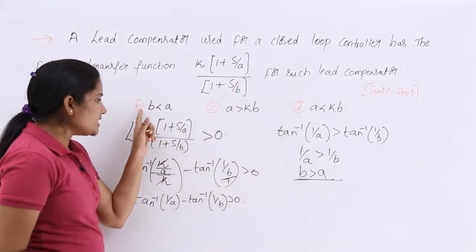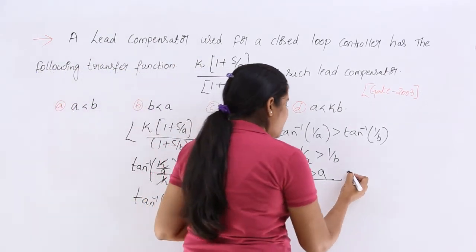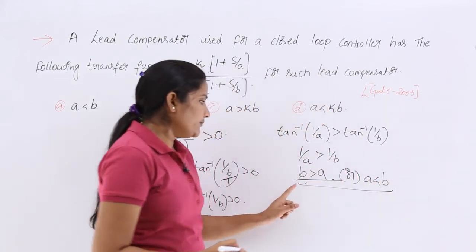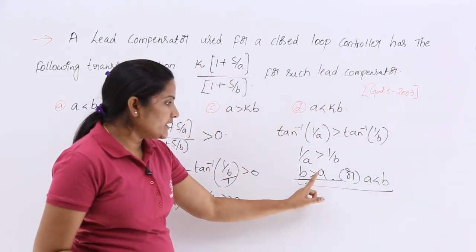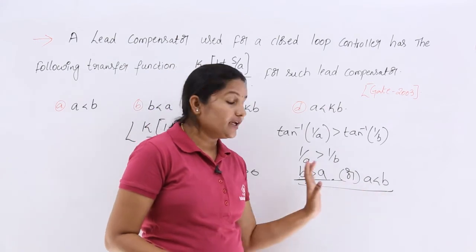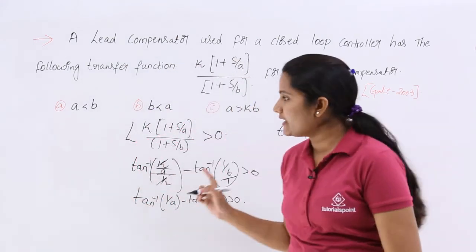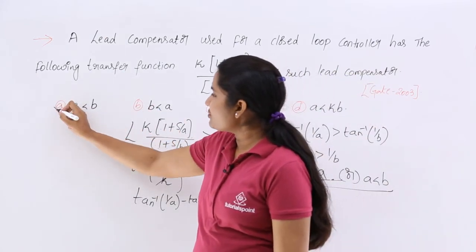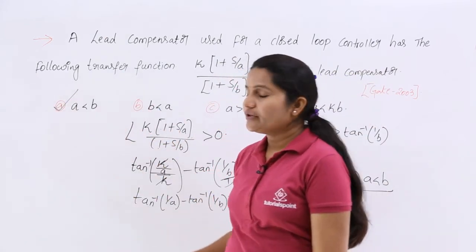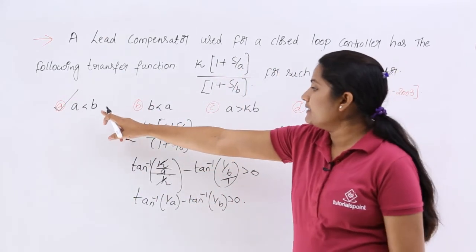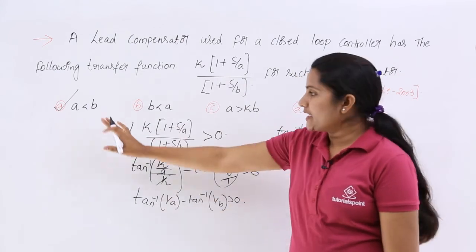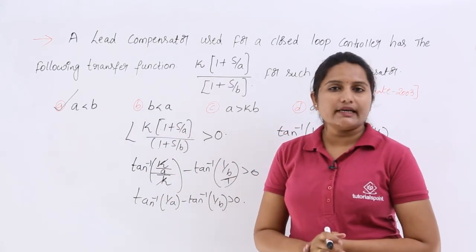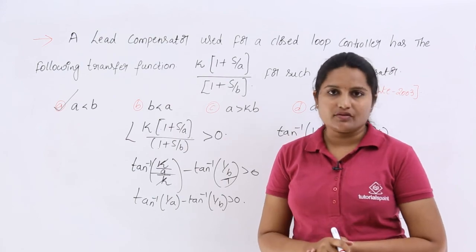Sending B to one side and A to the other, we get B greater than A as the condition. So, if you have B greater than A, or equivalently A less than B, in your options, you can select that. A less than B appears as the first option itself, so that is the answer. This is how you solve problems related to compensator transfer functions.